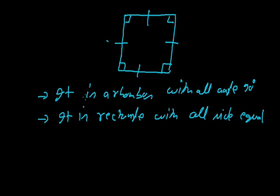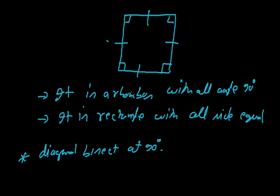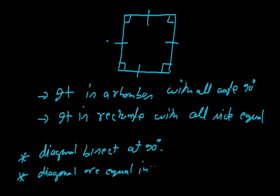Properties of a square: opposite sides equal, opposite angles equal, diagonals bisect each other — from parallelogram. Since it is a rhombus, the diagonals bisect each other at 90 degrees. Since it is a rectangle, the diagonals are equal in length. These proofs can be done the same way as we did for rectangle and rhombus.